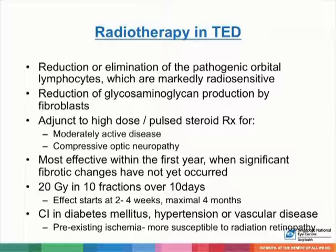Studies have shown that radiotherapy helps with reducing or eliminating pathogenic orbital lymphocytes, which are markedly radiosensitive. Radiotherapy can also be used as an adjunct to high-dose or pulse steroid treatment for moderately active disease and for patients with compressive optic neuropathy. Radiotherapy is most effective within the first year when significant fibrotic changes have not yet occurred, and a course of 20 gray given over 10 fractions should be given. It is, however, contraindicated in patients with diabetes mellitus, hypertension, or vascular diseases who may have pre-existing retinopathy.